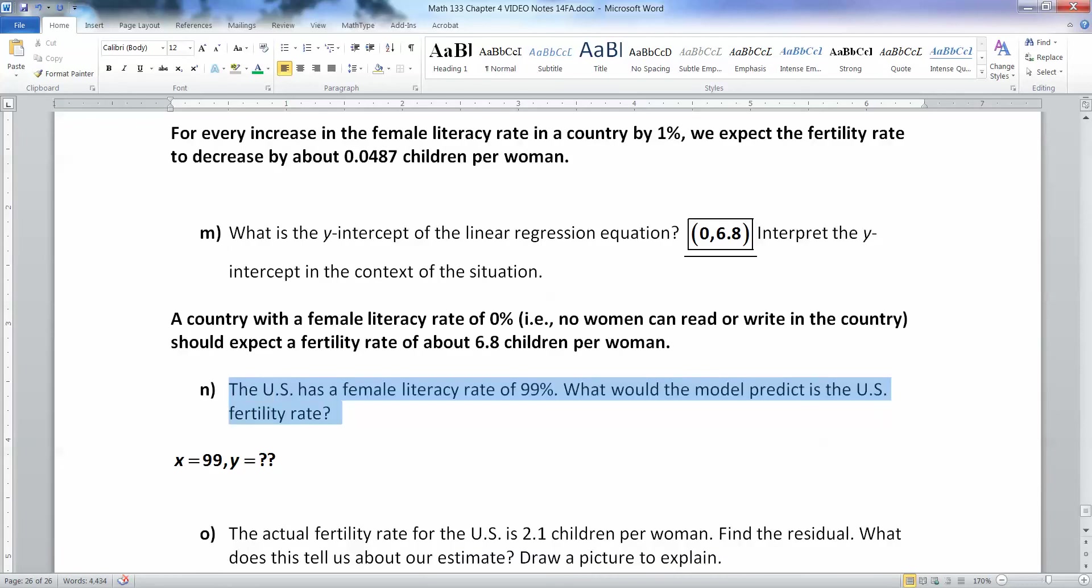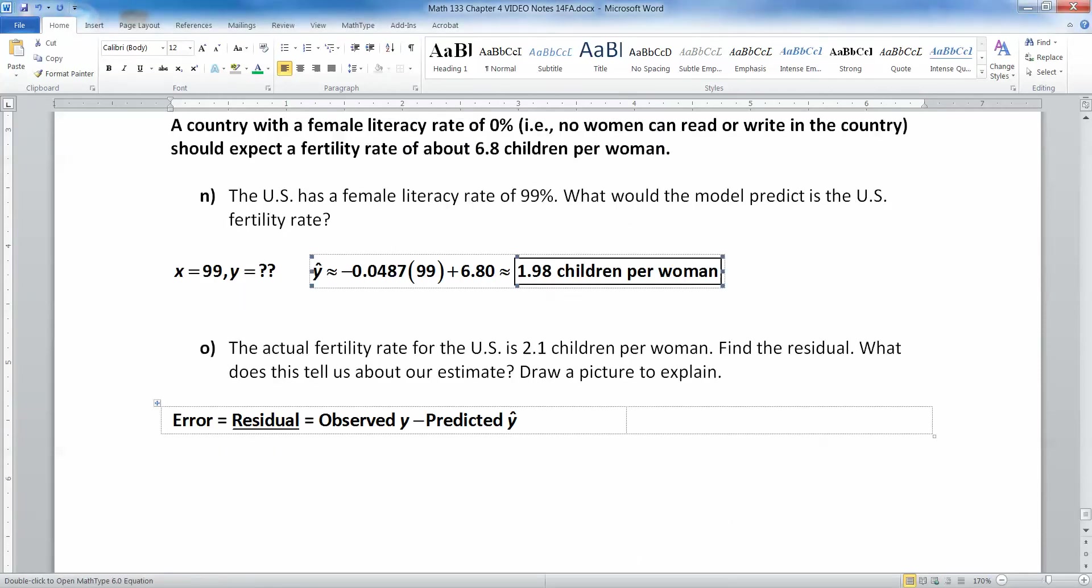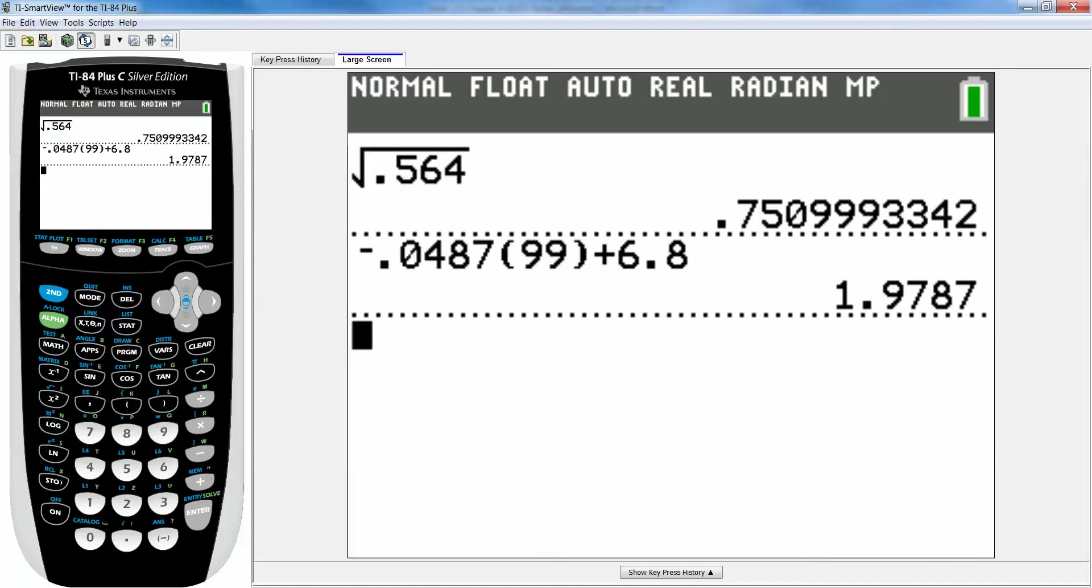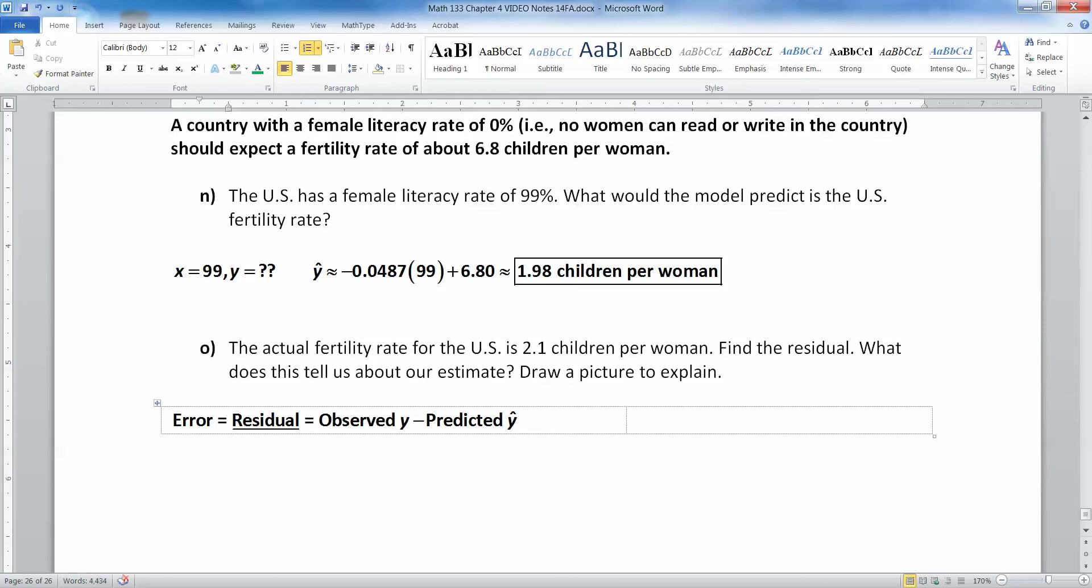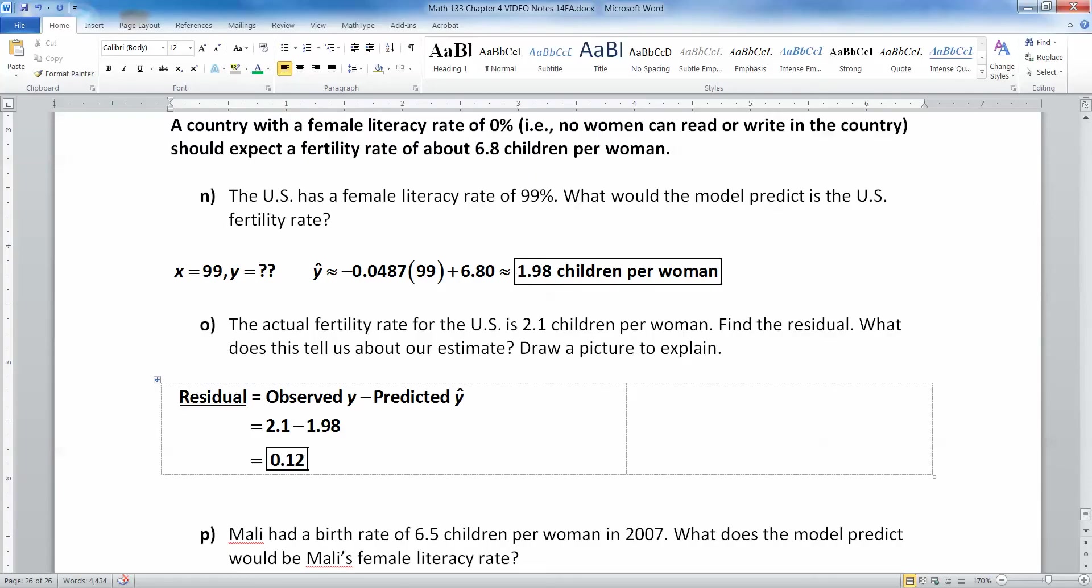Alright, now we have the U.S. has a female literacy rate of 99%. What would the model predict is the U.S. fertility rate? So when I tell you that the female literacy rate is 99, I'm giving you X, and then I'm asking you for Y. So you're going to substitute 99 into the equation. Alright, so we plug 99 in, and when I did that with my calculator, it gave me about 1.98 children per woman. Don't forget to use the little negative symbol down here with the parentheses rather than the big subtraction symbol. Alright, now let's find the residual. Residual is what we observe in real life, which is 2.1, take away what we predicted.